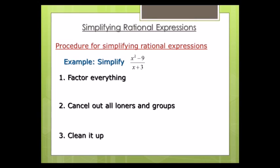We're going to simplify rational expressions. A rational expression is merely a fraction of polynomials — you have a polynomial on top, a polynomial on the bottom. We're going to do lots of things with rational expressions: add them, subtract them, multiply, divide them. But in this case I'm dealing with one fraction — a polynomial on top, a polynomial on the bottom — and I'm going to factor them and then cancel stuff out.